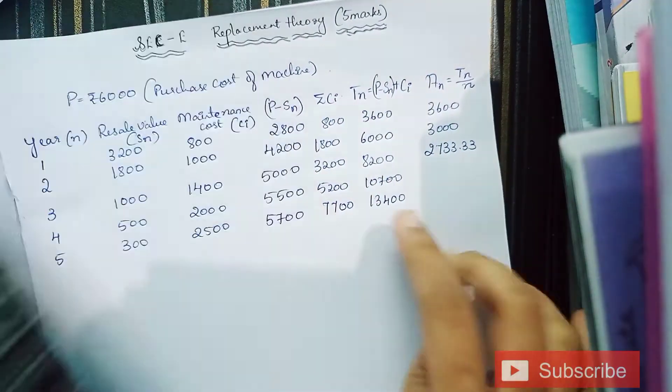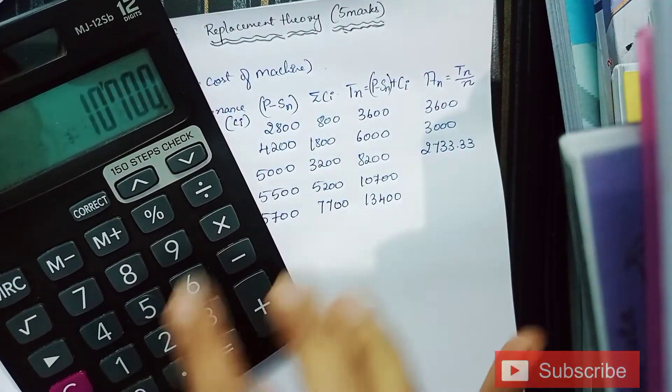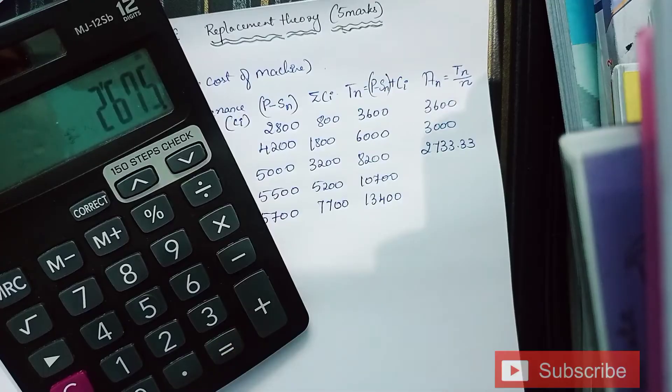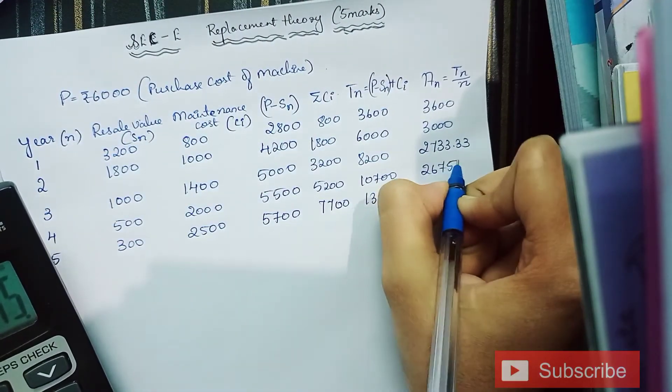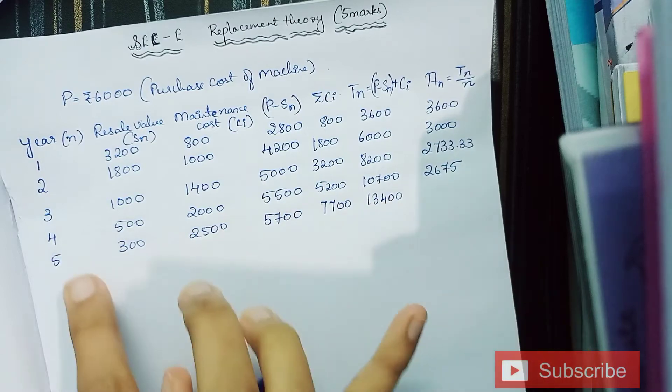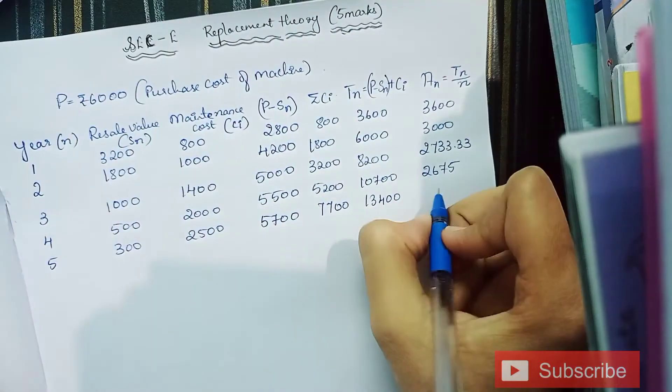Next is 10,700 divided by 4 which is 2675. And the last one which is 13,400 divided by 5 makes it 2680.